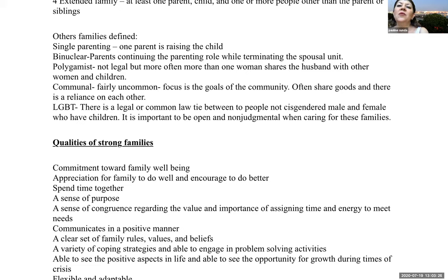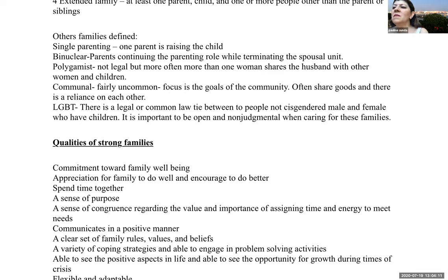Other family types include single parenting, where one parent is raising the child. Binuclear parenting continues the parenting role while terminating the spousal unit — similar to joint custody. Polygamist families, though not legal, involve more than one woman sharing a husband. Communal families focus on community goals and share goods. LGBTQ families involve a legal or common-law tie between people who are not cisgender male and female who have children together. It is important to be open and non-judgmental when caring for these families.